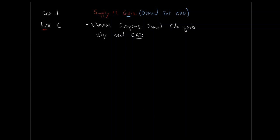Even though there's a reciprocal relationship, our focus is on the supply of euros because we're looking at the market for foreign exchange, not the market for Canadian dollars. This is an important distinction and a big stumbling block where students typically fall into trouble — they get stuck thinking about it as a market for Canadian dollars, when it's actually a market for foreign currency.